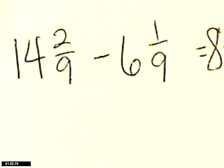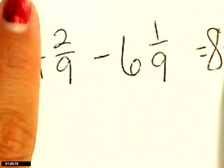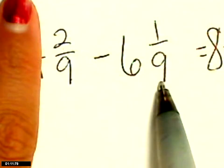If I have the same denominator, then I'm going to look at my fractions and see if I can subtract them. 2 minus 1 I can do, and that's 1. Keep your denominator.